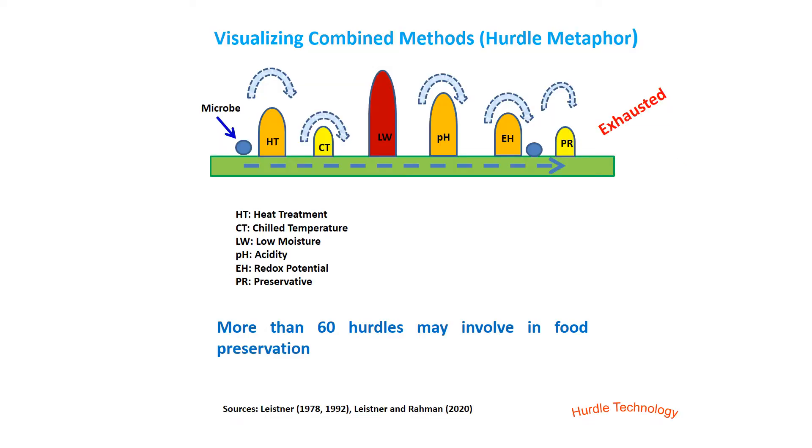However, this metaphor could help us visualize the hurdle technology of food preservation. Dr. Leistner first visualized hurdles as arranged one after another. In this diagram, heat treatment, chilled storage, low moisture, acidity, redox potential, and preservatives are the hurdles. Microbes need to jump over the hurdles one after another to survive. They need to spend energy to jump over the hurdles. In this process, microbes will be exhausted and they would be unable to grow, or in the extreme case they will die.